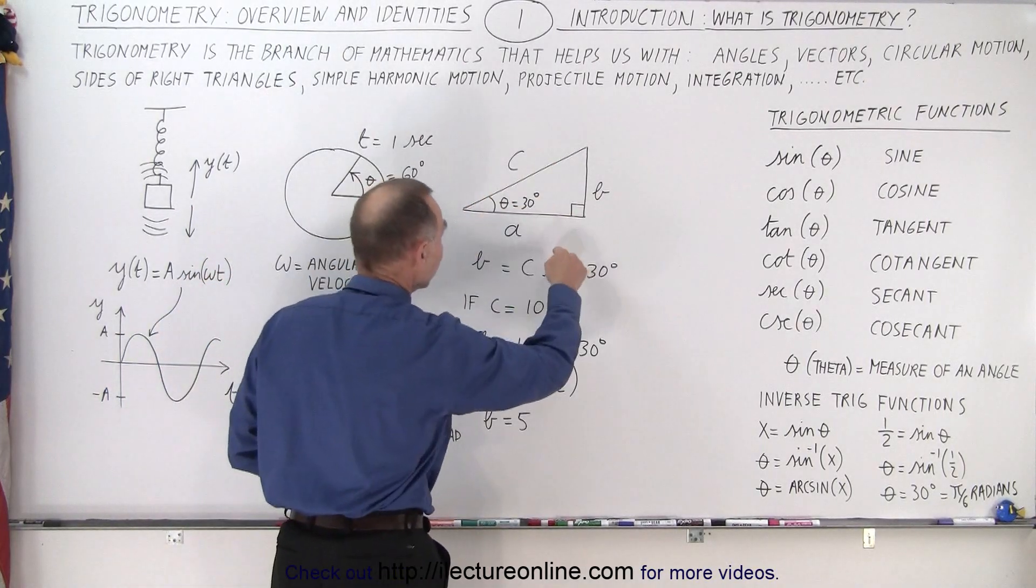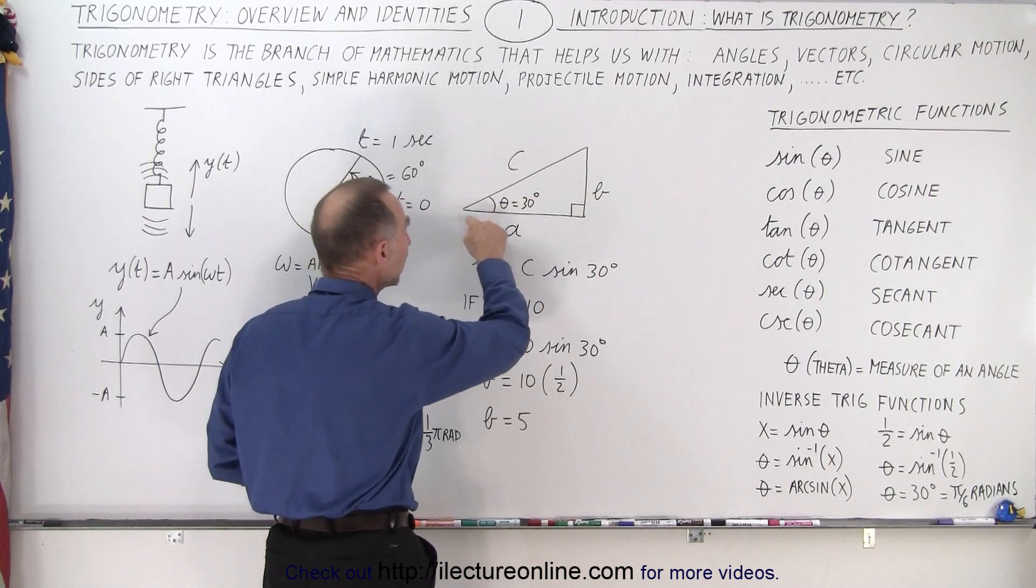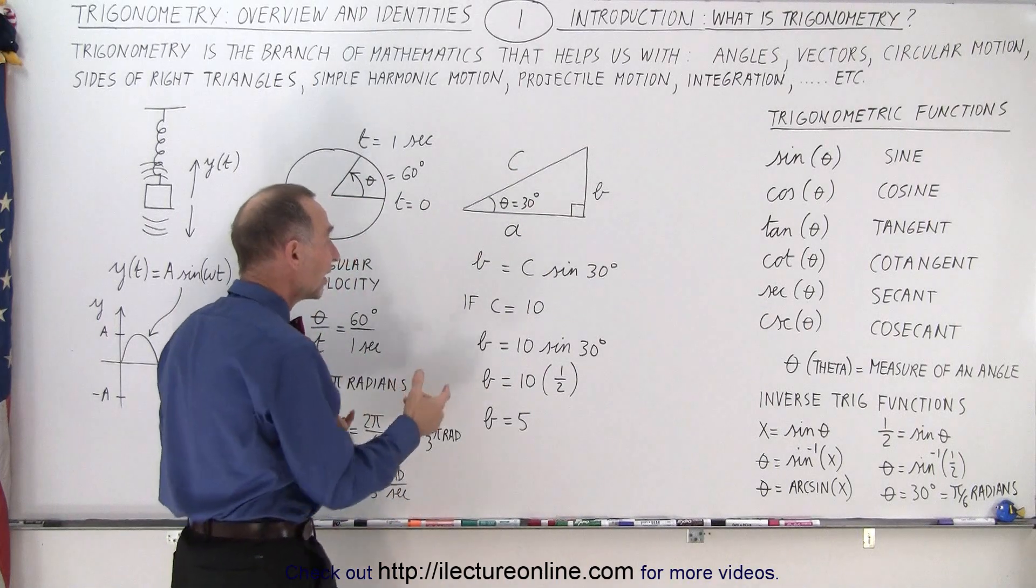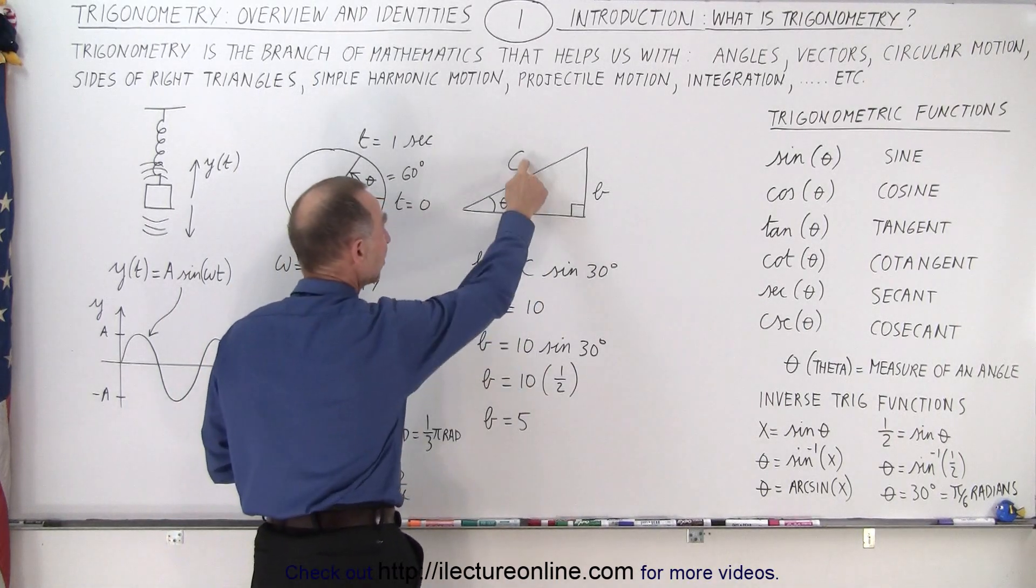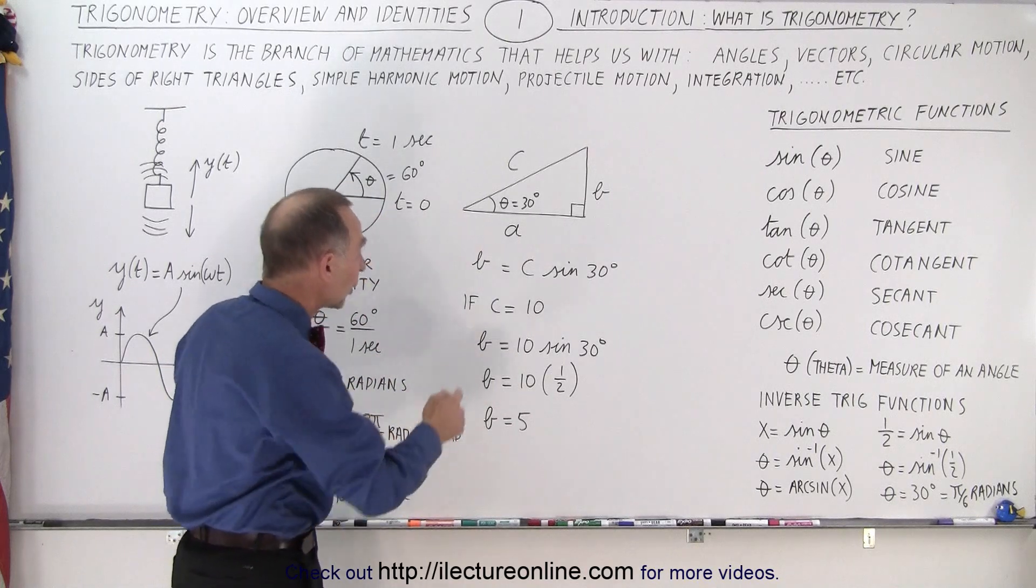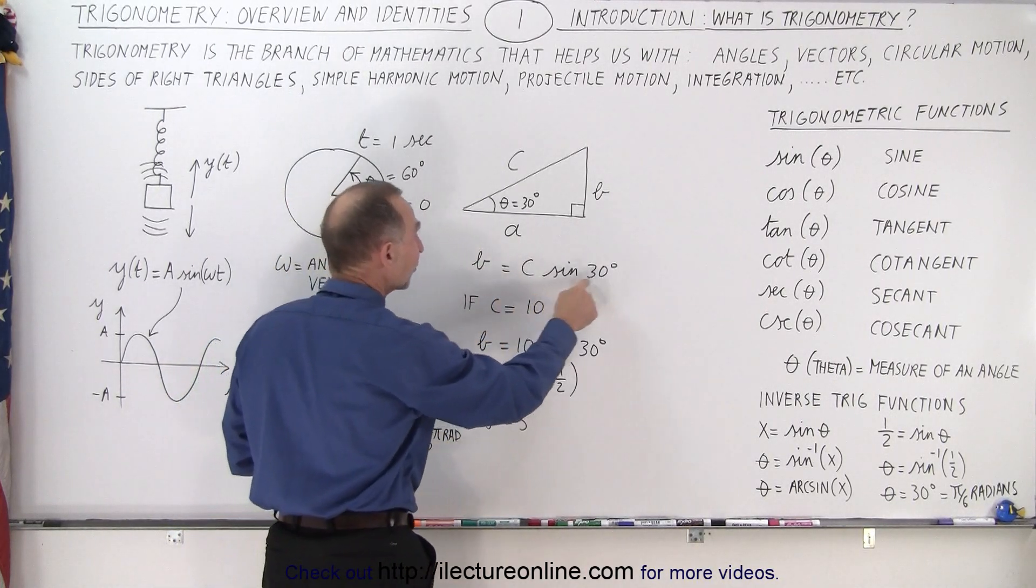Let's say we have a right triangle with sides A, B, and C, and we know the angle between A and C to be 30 degrees, and let's say that we know the value for C. C equals 10—10 inches, 10 centimeters, doesn't matter—and we want to know the value for B.